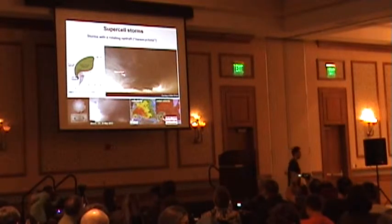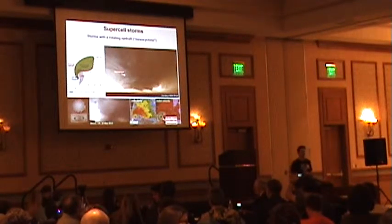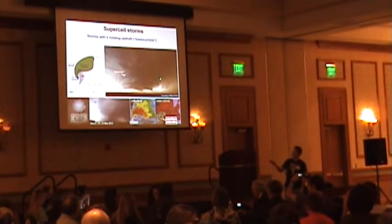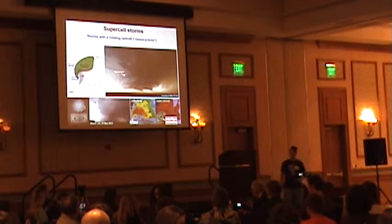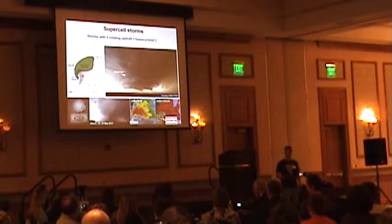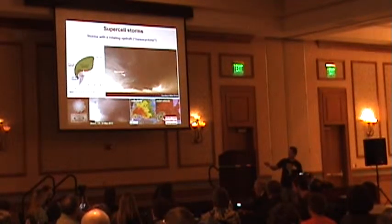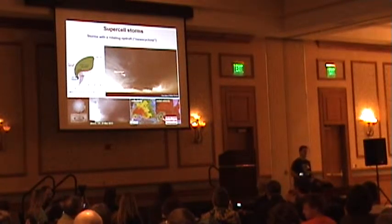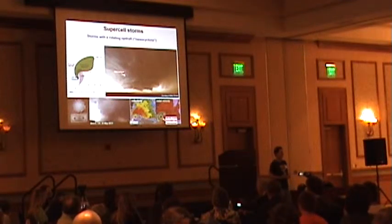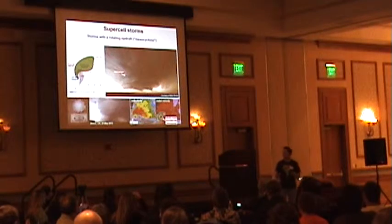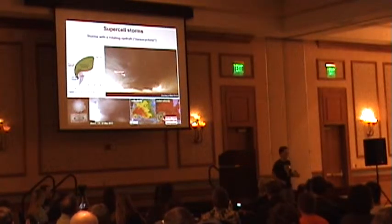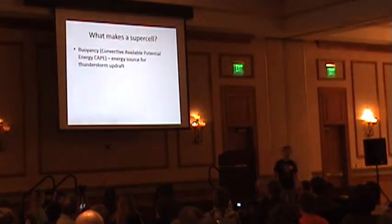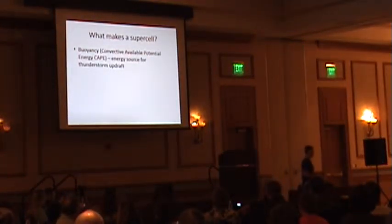I assume everybody in here is relatively familiar with supercells, since you're a chaser or not, and most people have seen supercells. Just to make sure - we're talking about storms with a rotating mesocyclone, essentially a rotating updraft. We have research going back into the late 1970s with the classic supercell model based on observation. At that point we didn't really know how we got supercells; we just knew what they looked like. So what makes a supercell - what do you need in the environment to get a rotating storm?